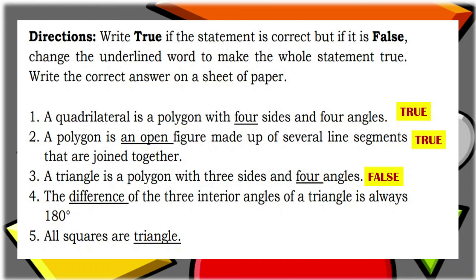Number four: The difference of the three interior angles of a triangle is always 180 degrees. The underlined word is 'difference.' That is false. The correct word is 'sum' — the sum of the three interior angles of a triangle is always 180 degrees, not the difference.